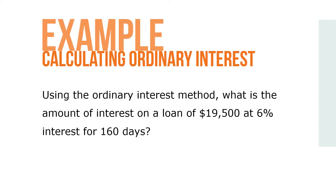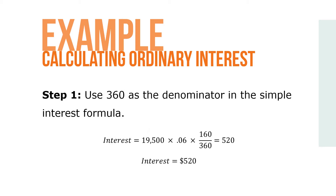Here's an example. Using the ordinary interest method, what is the amount of interest on a loan of $19,500 at 6% interest for 160 days? Step 1: Use 360 as the denominator in the simple interest formula. So interest equals $19,500 times 0.06 times 160 over 360, which equals $520 of interest.